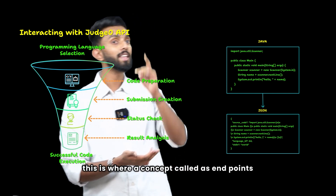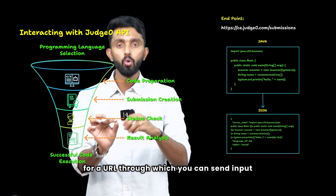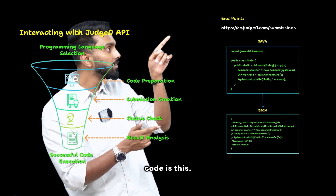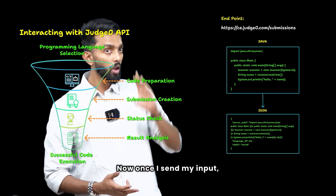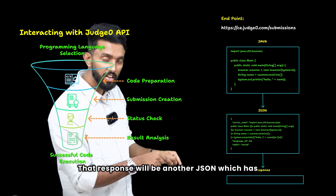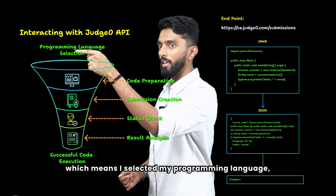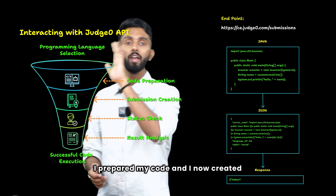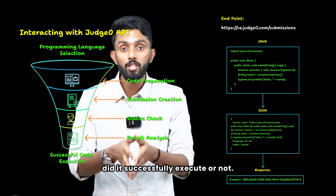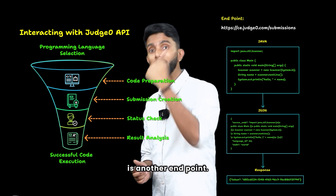This is where a concept called endpoints comes into the picture. An endpoint is a hi-fi word for a URL through which you can send input and get output from an API. The endpoint for sending your code is this one — all available in the documentation. Once you send your input, the API will send you a response, which is another JSON containing a single thing called a token. The token is the unique identifier for your submission — meaning you selected your language, prepared your code, and created a submission. Now you want to check whether the code you sent executed successfully. To check the status of your submission, there is another endpoint.